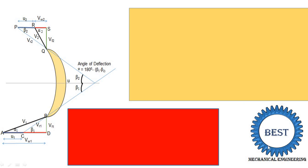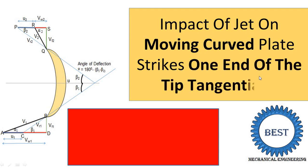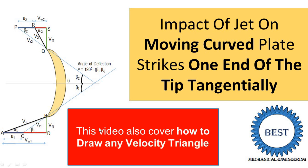Welcome to my YouTube channel, Basic Mechanical Engineering. In this video, I explain the impact of a jet on a moving curved plate, striking one end of the tip tangentially. I will show you step by step how to draw velocity diagrams. If you watch this video, you will be able to draw any velocity triangles for a turbine or a pump. I explain velocity triangles for inlet and outlet for three different cases: when alpha2 is less than 90, equal to 90, and greater than 90, and how to find the work done and efficiency.